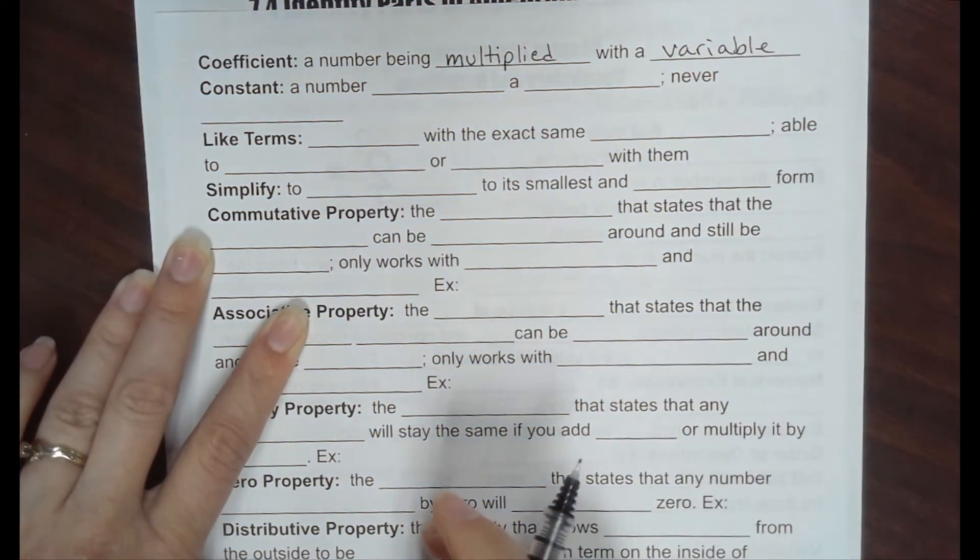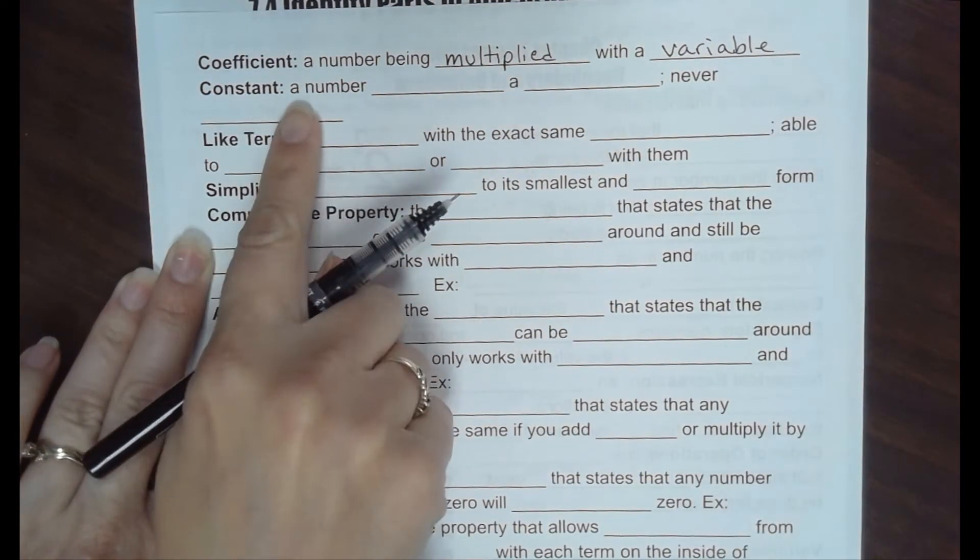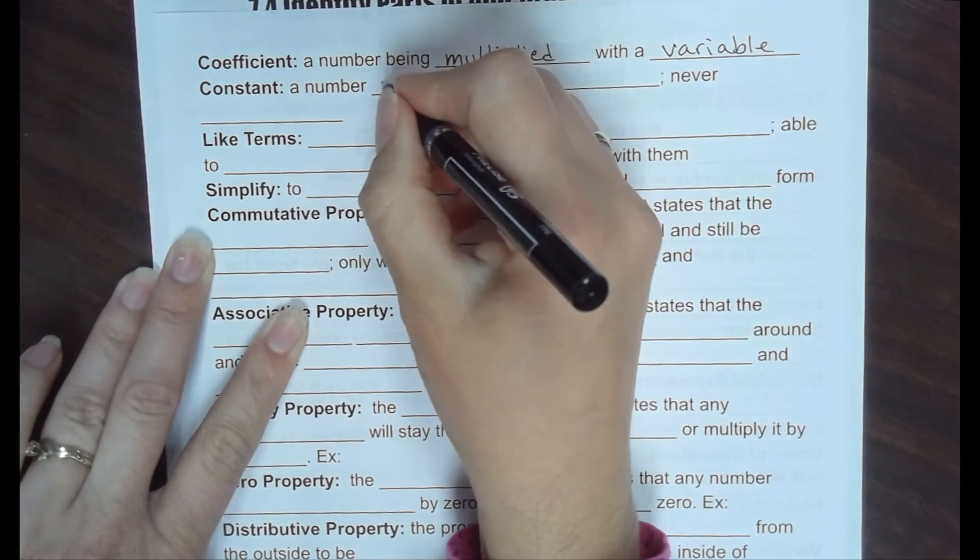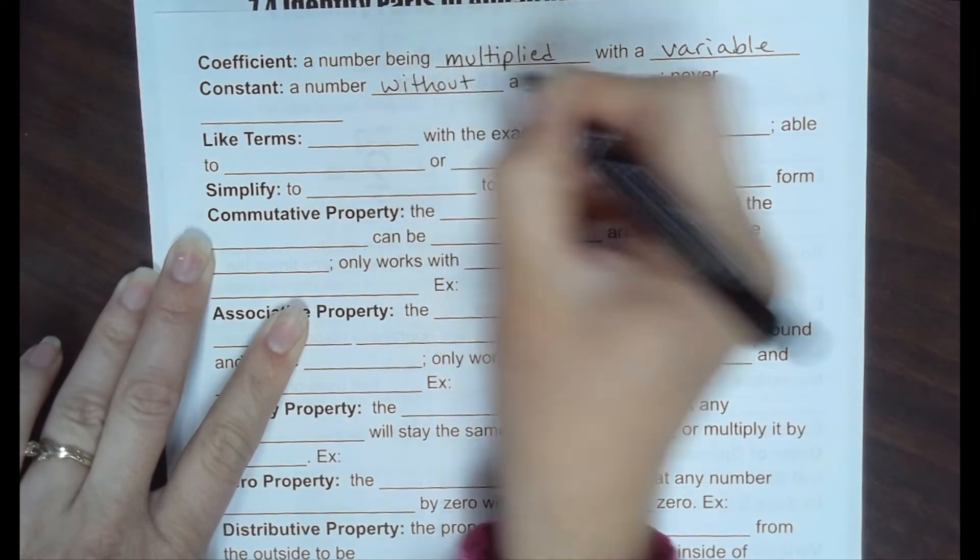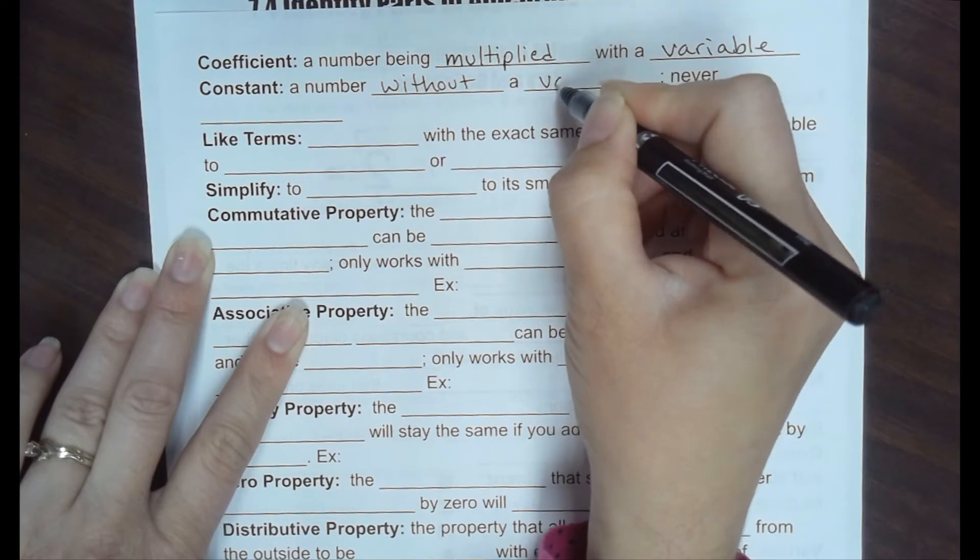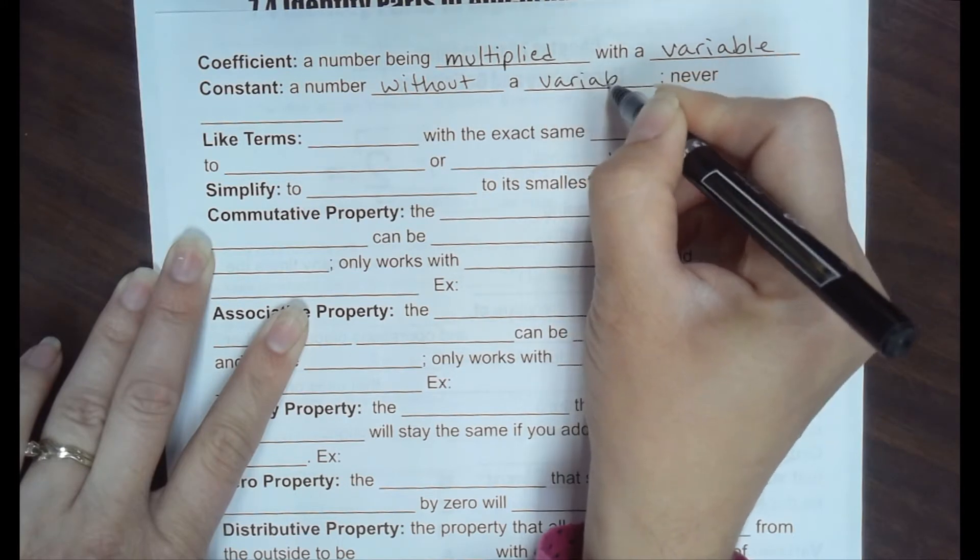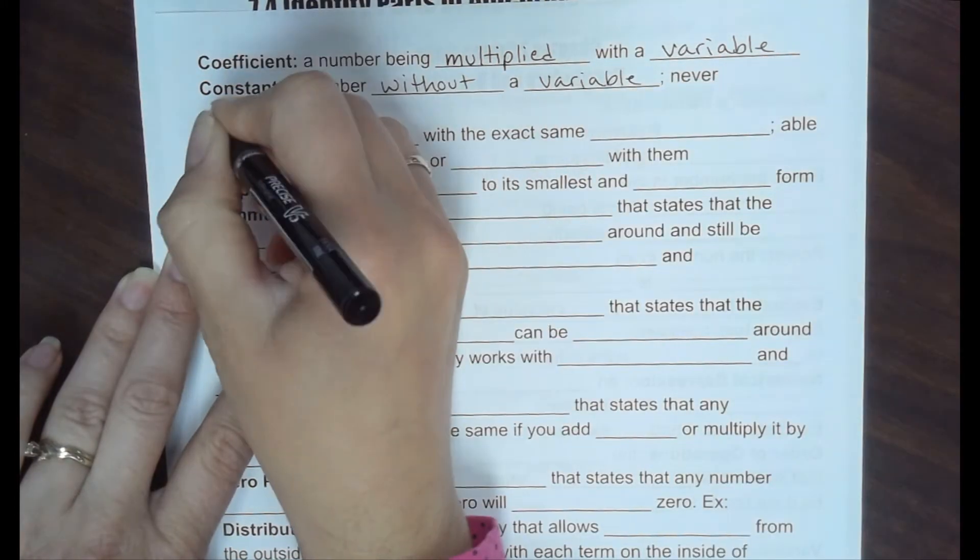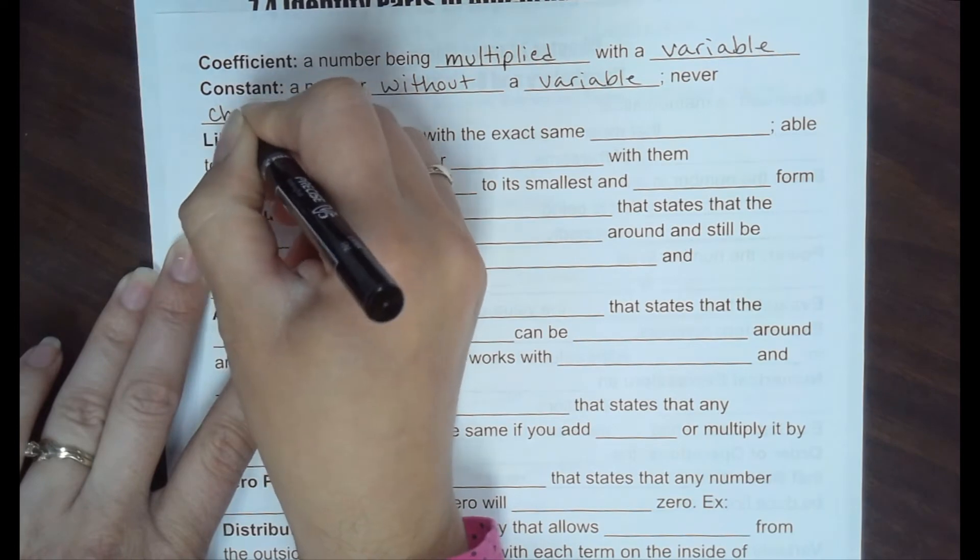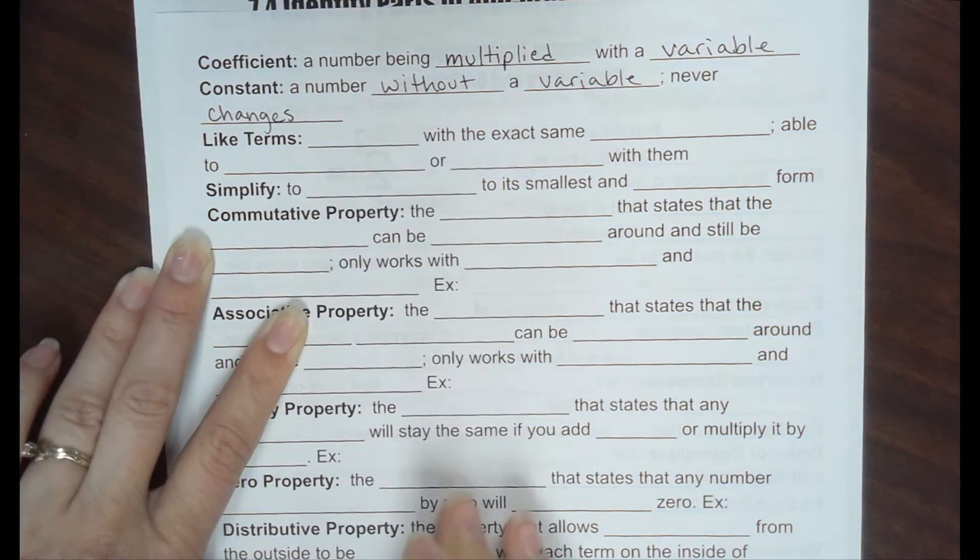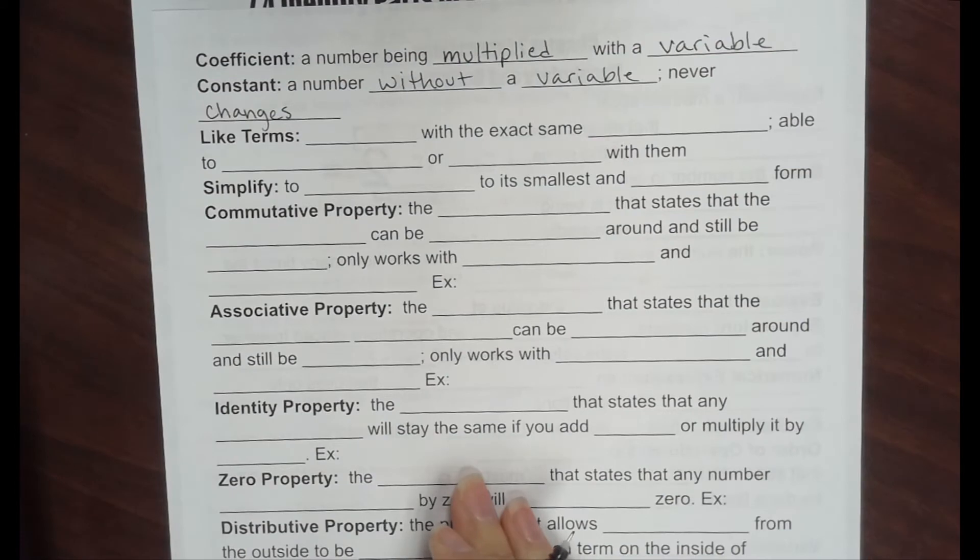The next one we're going to talk about is a constant. It is a number without a variable. It never changes. That's why it's called a constant. Whether or not the variable changes, that one will not change.